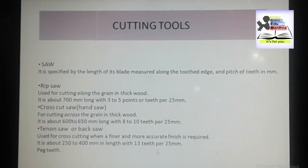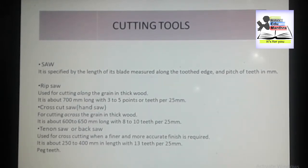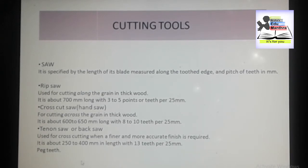The tenon saw has 13 teeth per 25 mm. You should remember one term: peg teeth. The teeth are shaped in the form of an equilateral triangle and are sometimes termed peg teeth. So peg teeth is related to the tenon or back saw.